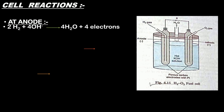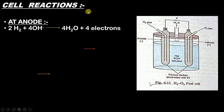H2 gas will not directly lose electrons. Instead, H2 will react with OH⁻ ions. The KOH solution dissociates into K⁺ and OH⁻ ions. So H2 gas reacts with OH⁻ ions and gives us 4 H2O water molecules plus 4 electrons.